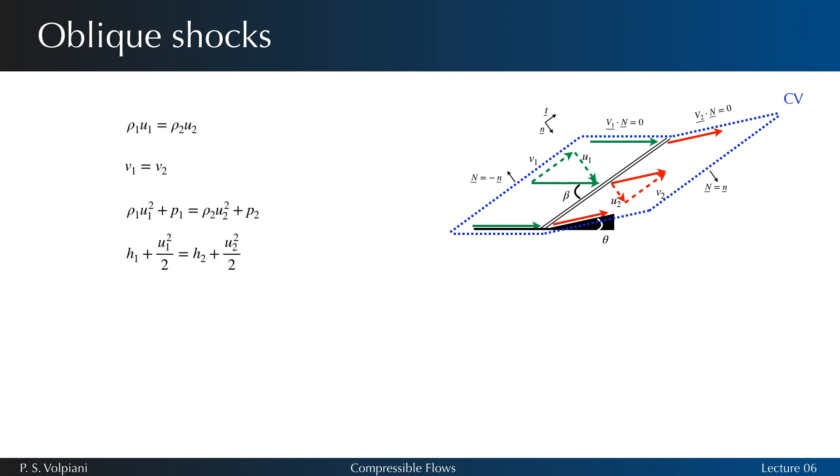We note that across an oblique shock, the tangential component of the velocity vector V is preserved, and the normal component of the velocity vector U verifies exactly the same conservation laws than the governing equations for a normal shock. So, the property changes in an oblique shock are governed by the normal component of the upstream Mach number. Therefore, we can treat the oblique shock as a one-dimensional shock in the normal direction.